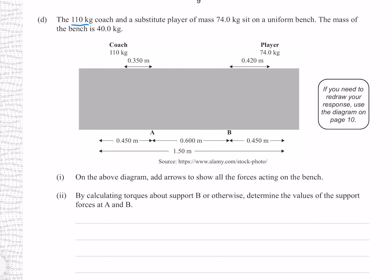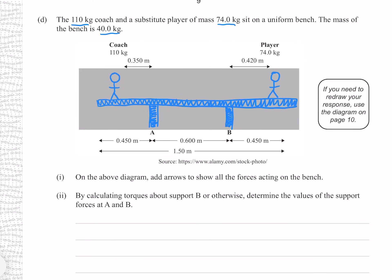The 110 kilogram coach and a substitute player of 74 kilograms sit on a uniform bench. The mass of the bench is 40 kilograms. Add arrows to show all of the forces acting on the bench: downward weight forces from the coach and player, upward forces from the two supports, and the weight force from the bench itself acting from its middle.